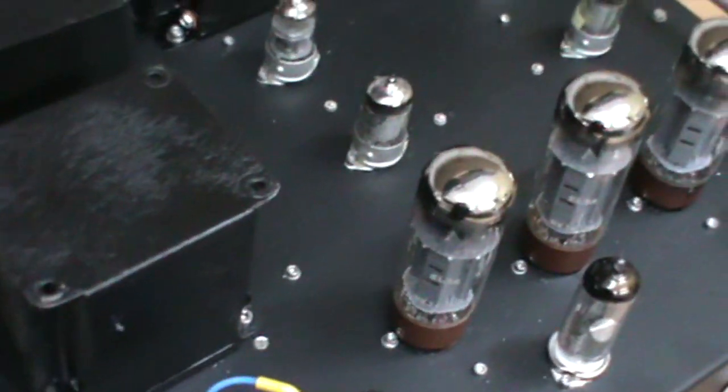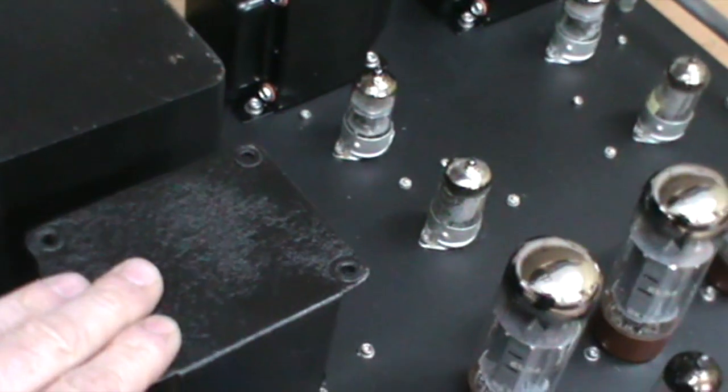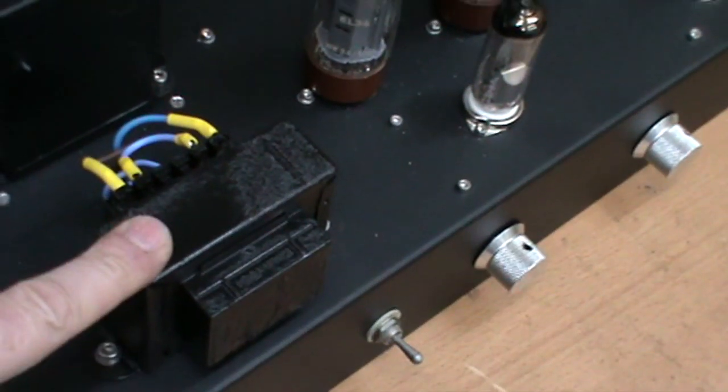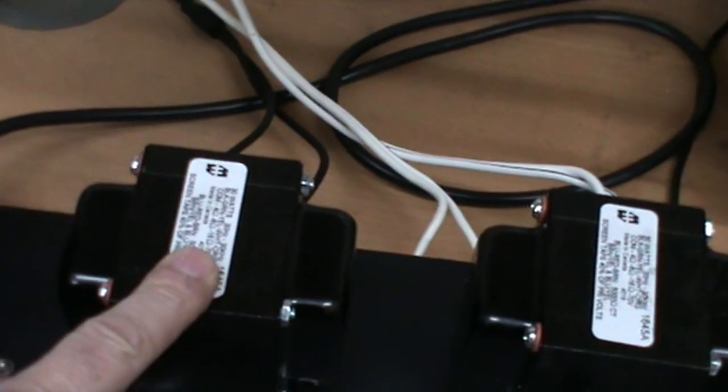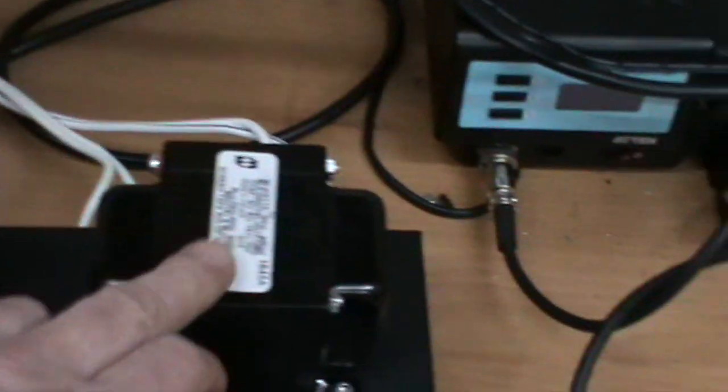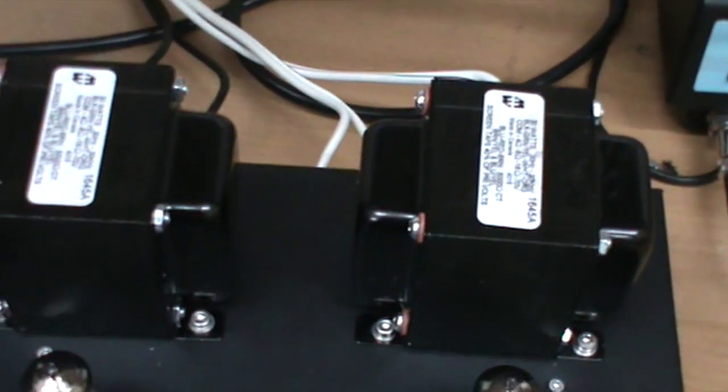All along here we've got the high voltage supply, the high voltage transformer, a choke, and a filament transformer for the valve heaters. At the back we've got output transformers because these output valves are EL34s arranged in push-pull.